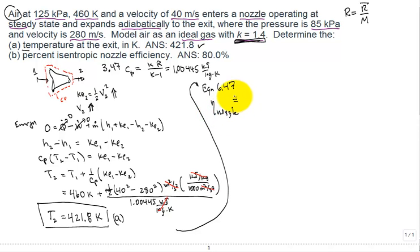The efficiency of the nozzle is equal to the specific kinetic energy at the exit divided by the specific kinetic energy at the exit assuming isentropic flow through the nozzle.